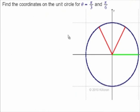Now to find the coordinates on a unit circle for π over 3, and after we have π over 3, π over 6 is pretty easy to find. So let's concentrate on the π over 3.